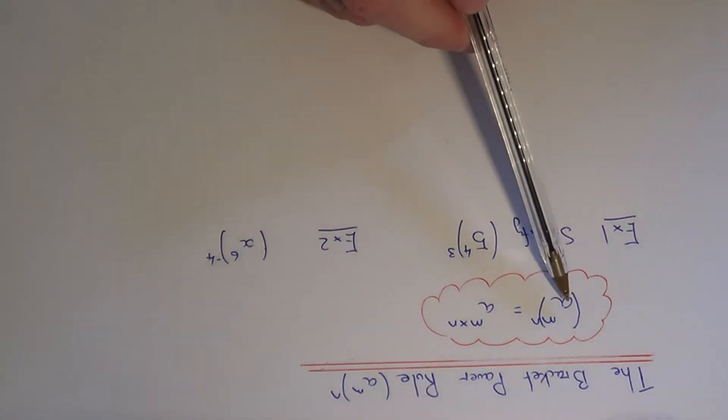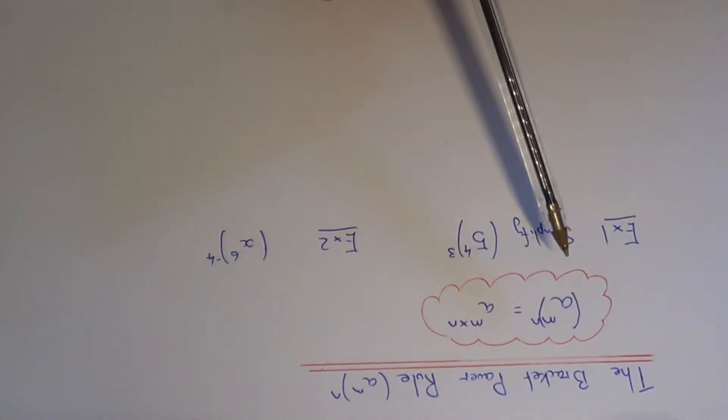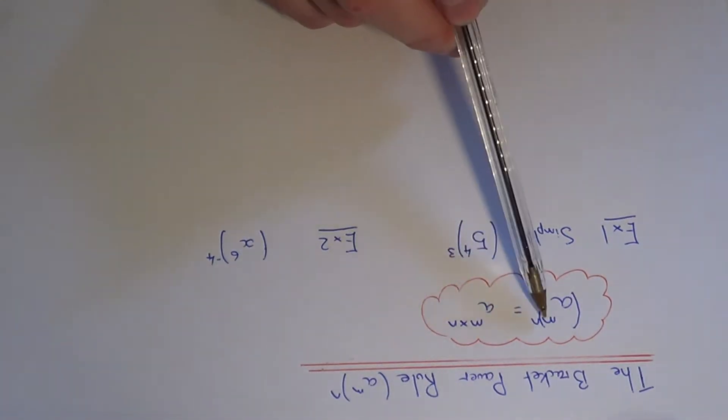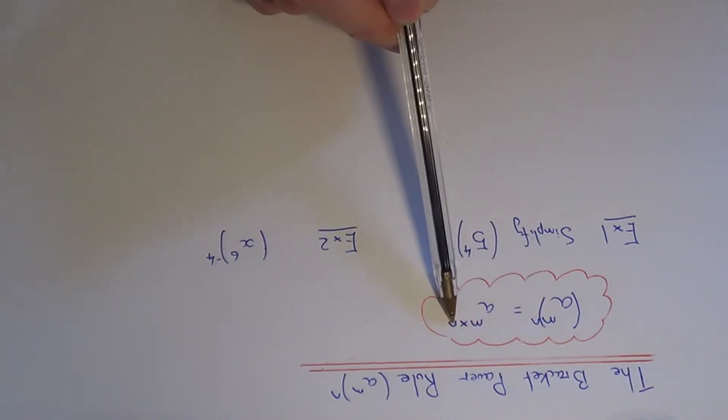If you have a to the power of something, and this is in the bracket and it's also to the power of a, to simplify it all you have to do is multiply the two powers together. So it's a to the power of m times n.